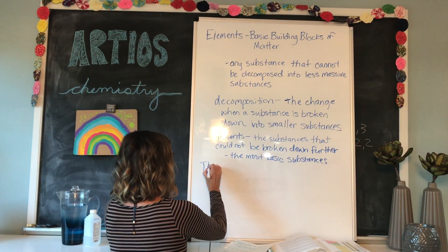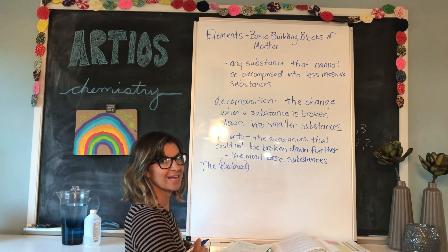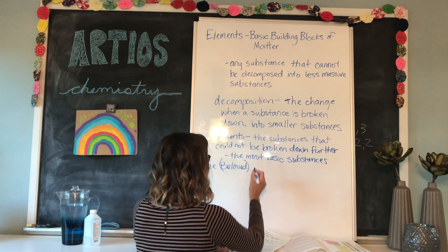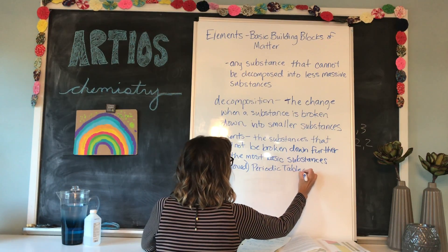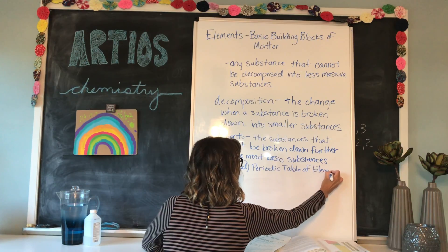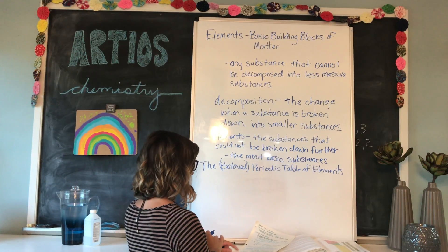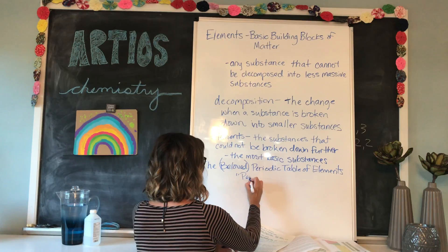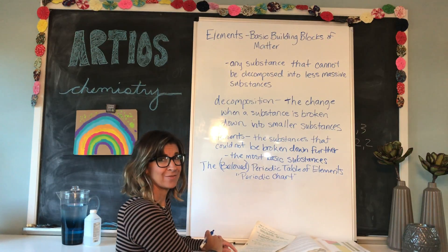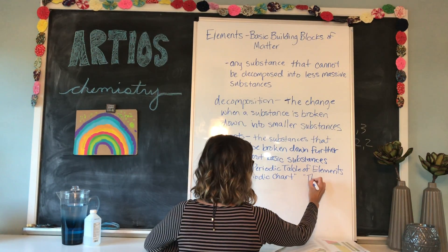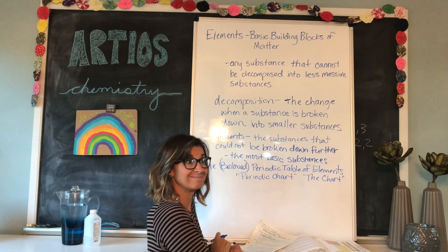Some people don't actually refer to it as 'the beloved' — sometimes it's just referred to as the periodic table of elements, and that's only when people have limited time. Sometimes people just refer to it as the periodic chart, or heaven forbid, just 'the chart.' But what can I say? Sometimes on Friday nights when we're going to have pizza, I don't have time to say pizza — I just call it za.